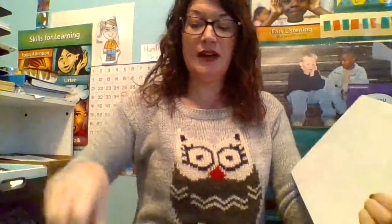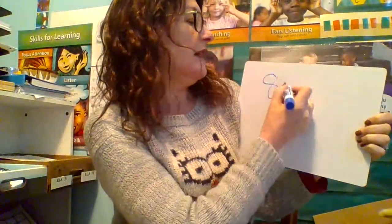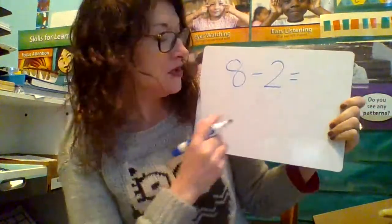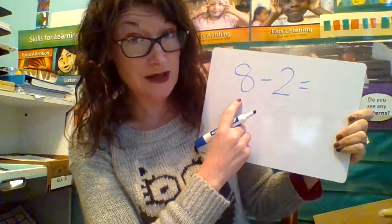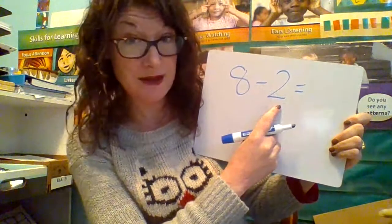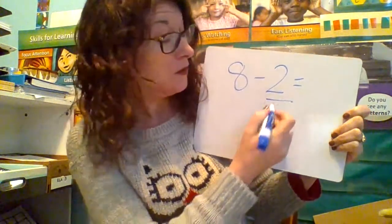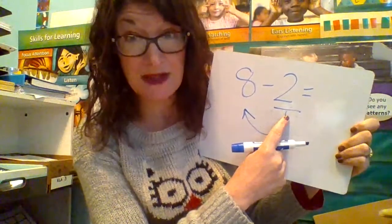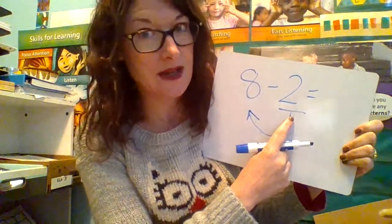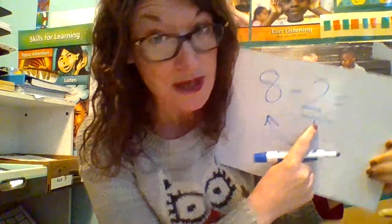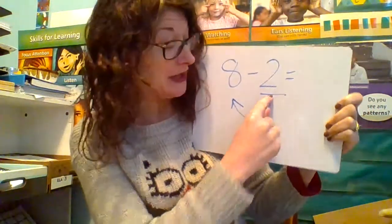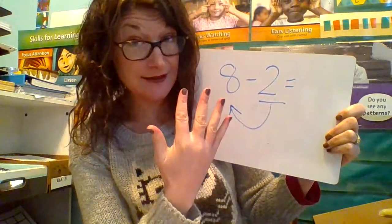Let's try it again with a new equation. Let's try 8 minus 2. Remember, when we're counting on in subtraction, we're going to start with the second number — we're going to start here and work backwards. We're going to grab this number, which happens to be the smaller number. That's something that's kind of tricky in the strategy, but once you get it down you're going to do great.